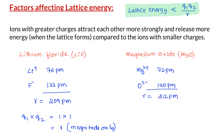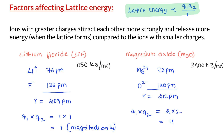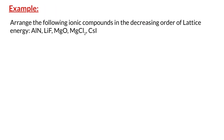However, the product of the charges in lithium fluoride is 1 × 1 = 1, but in magnesium oxide it is 2 × 2 = 4. So in theory, the lattice energy of magnesium oxide should be 4 times as much as lithium fluoride. And in reality, it is the case: the lattice energy of lithium fluoride is approximately 1050 kJ/mol and for magnesium oxide it is 3900 kJ/mol. Looking at the formula, since we multiply the charges but add the ionic radii, charges have a greater effect on lattice energy than ionic radii.